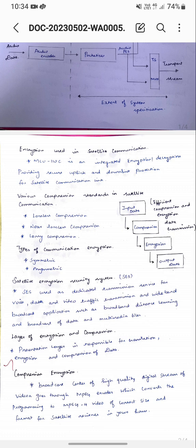Symmetric encryption uses a single key to encrypt and decrypt files — for example, encrypting zip files and decrypting with the same key. Examples of symmetric encryption include Blowfish, RC5, and RC6.